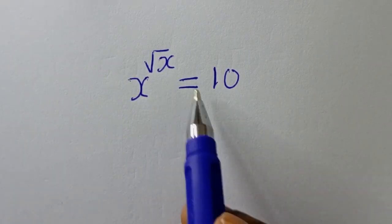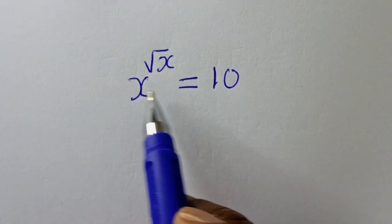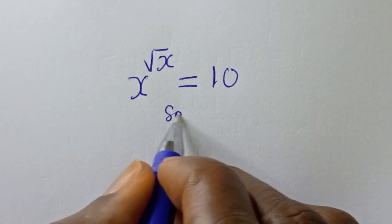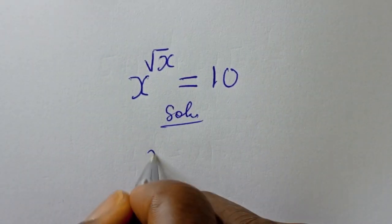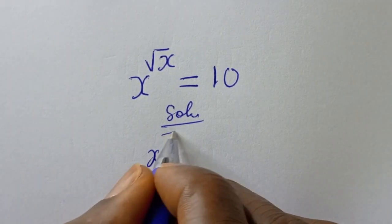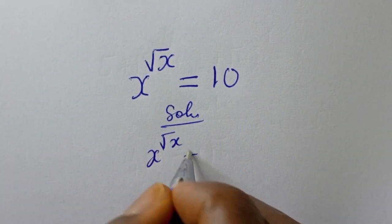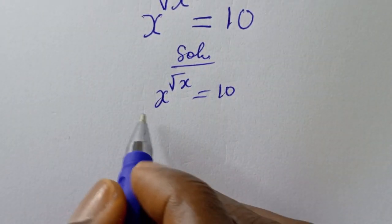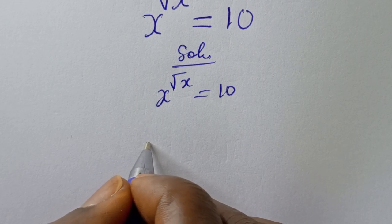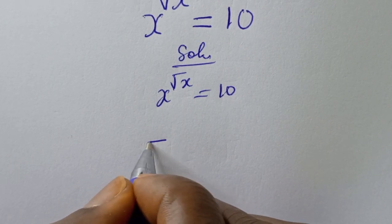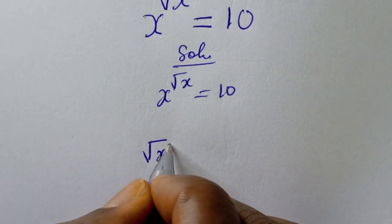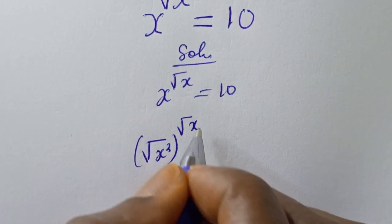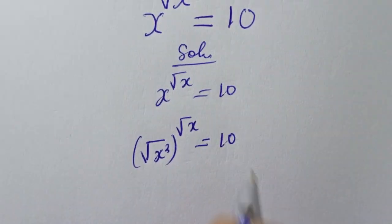Hello, welcome to MathGest. In this class we want to find the value of s from this given equation: s to the power of square root of s is equal to 10. We have s to the power of square root of s is equal to 10.